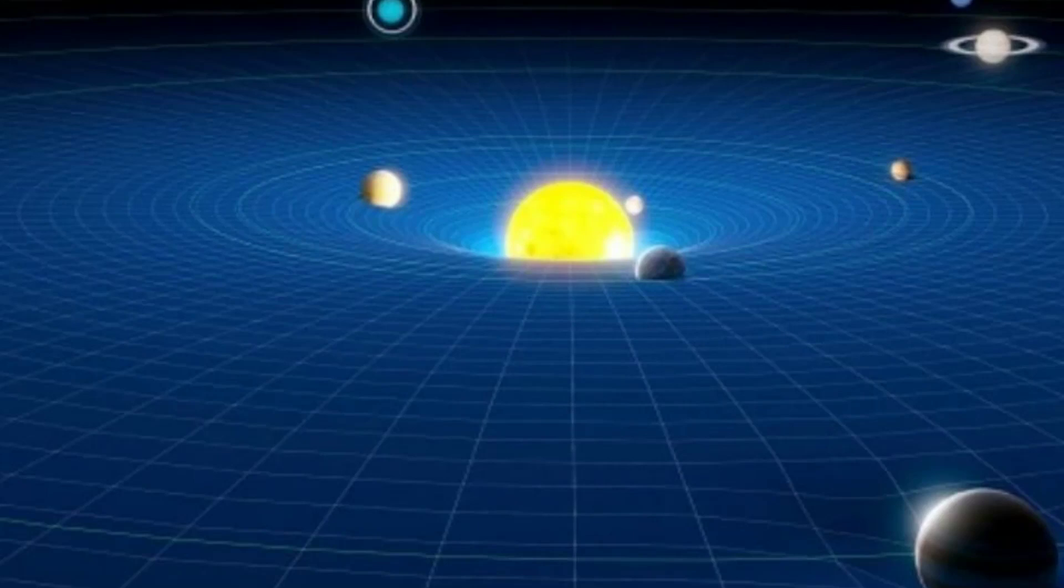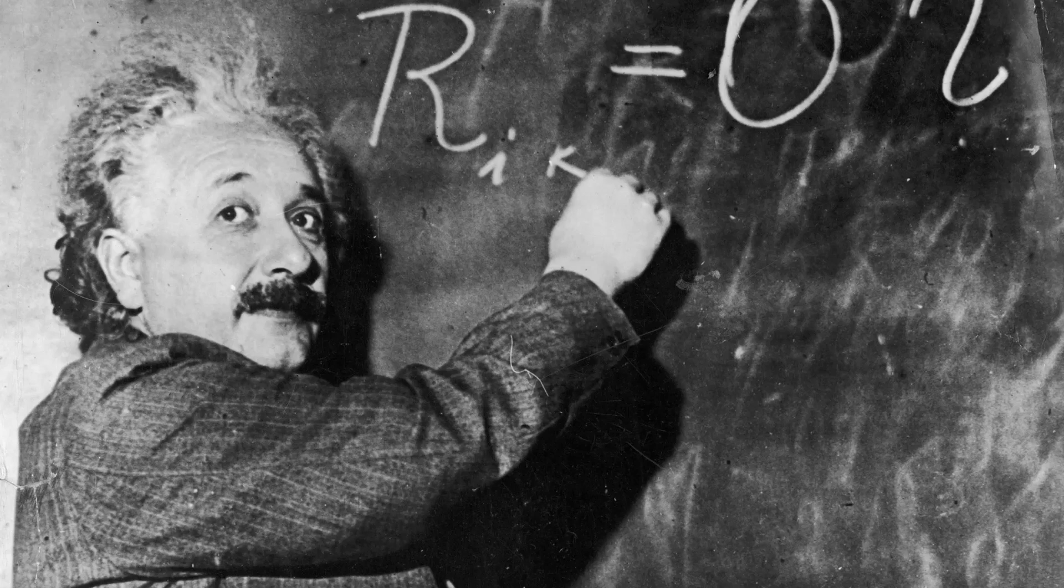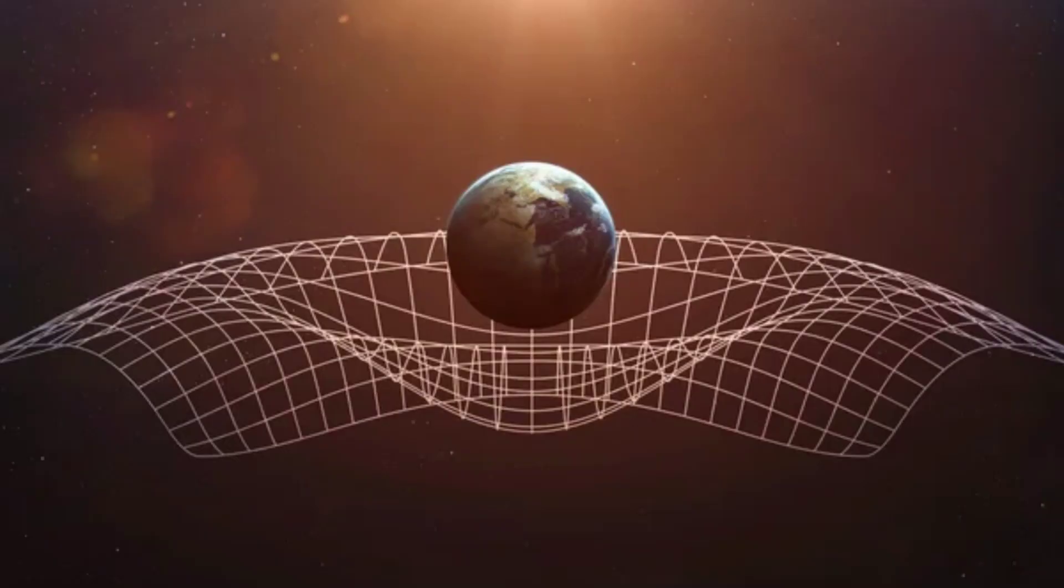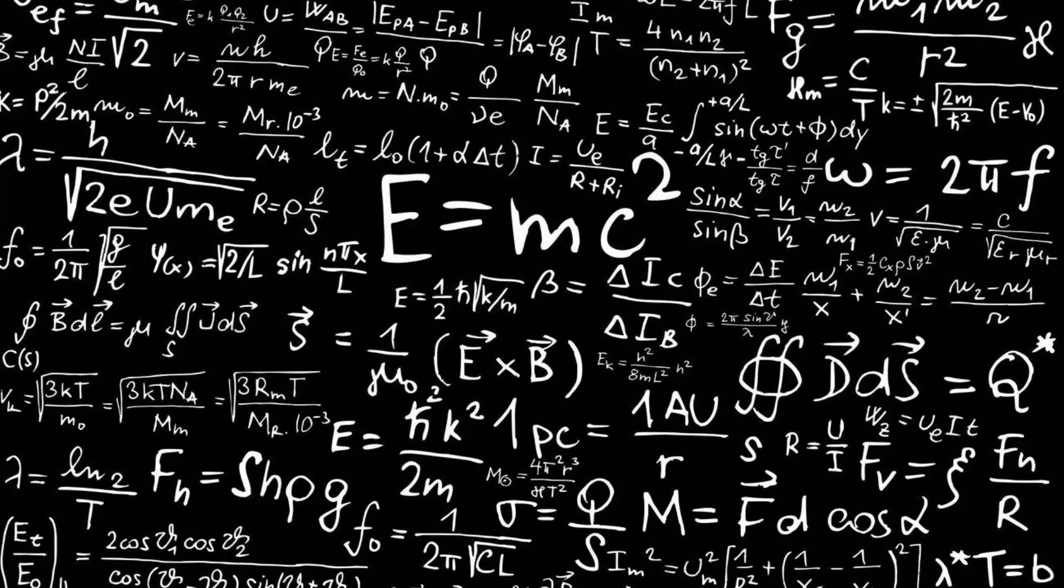Another key concept of the special theory of relativity is the idea that the speed of light is constant, regardless of the speed of the observer or the source of the light. This means that no matter how fast you are moving, you will always measure the speed of light as the same value.